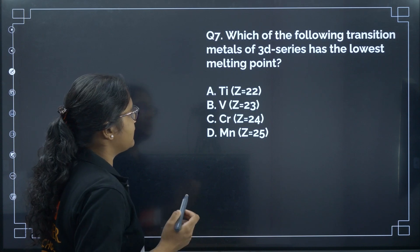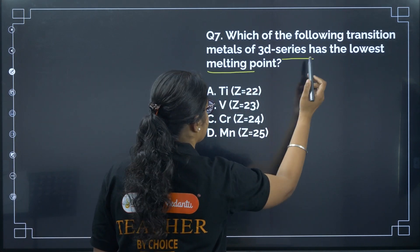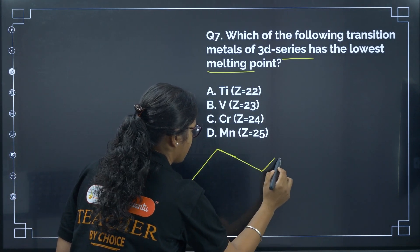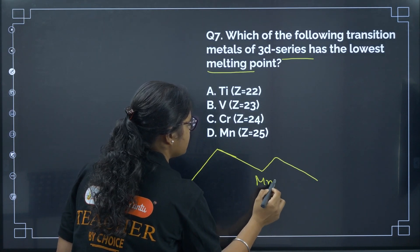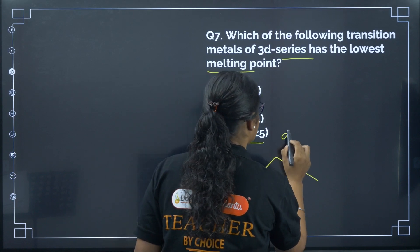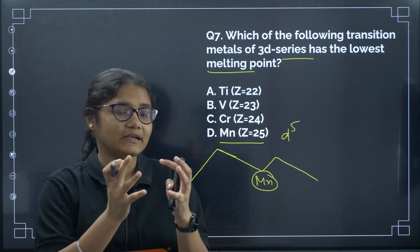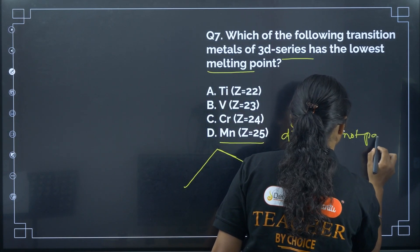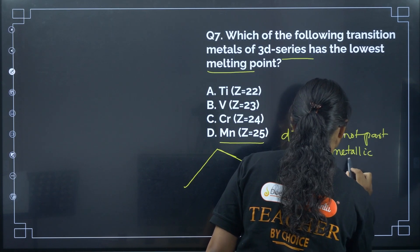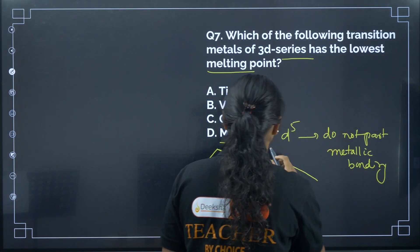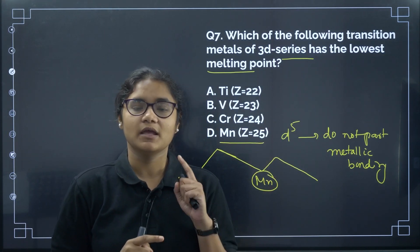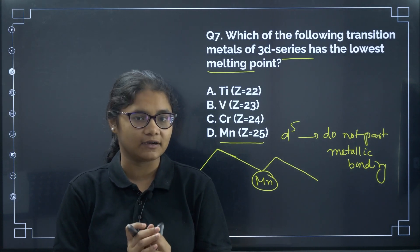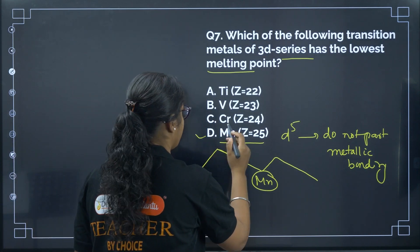Question 7: Which transition metal of the 3d series has the lowest melting point? Manganese is the element with the lowest melting point because it has a stable d⁵ configuration. These electrons are tightly bound to the nucleus and do not participate in metallic bonding. Because of its d⁵ stability, it does not contribute to metallic bonding, resulting in a very low melting point. The correct answer is option D.